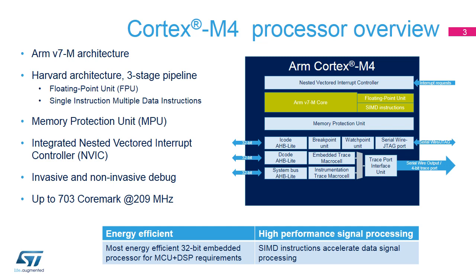It offers up to 703 CoreMarks when running at 209 MHz. The Cortex-M4 has three AHB-Lite master ports, enabling concurrent instruction and data transactions.